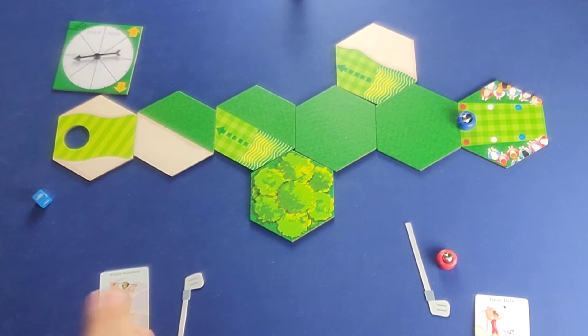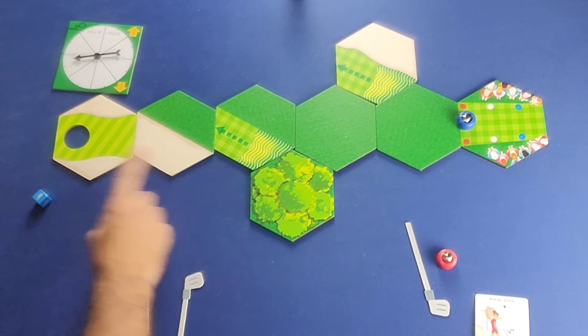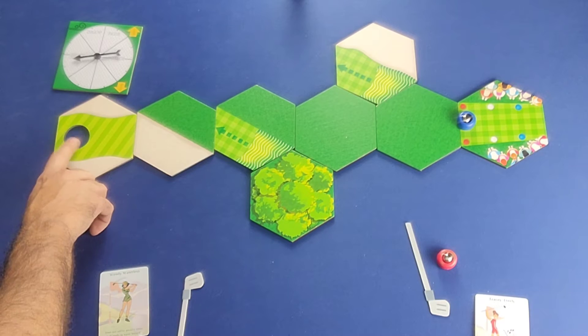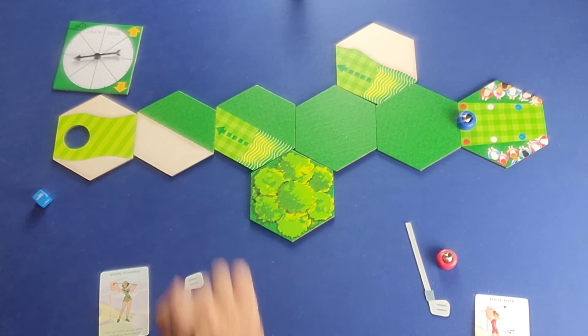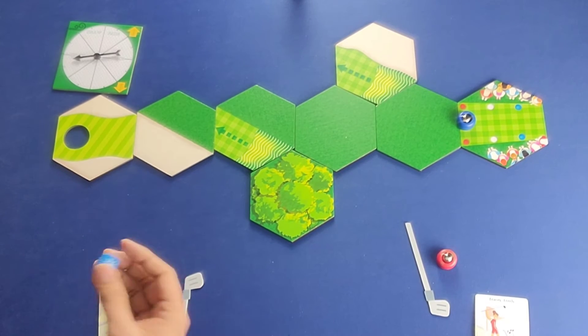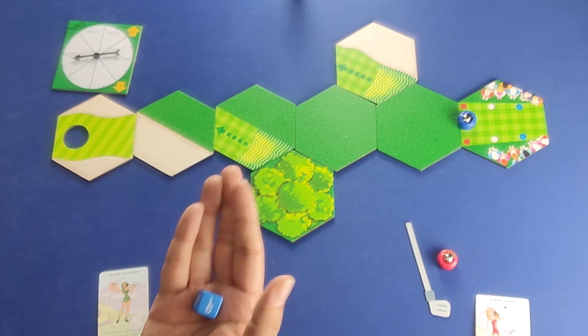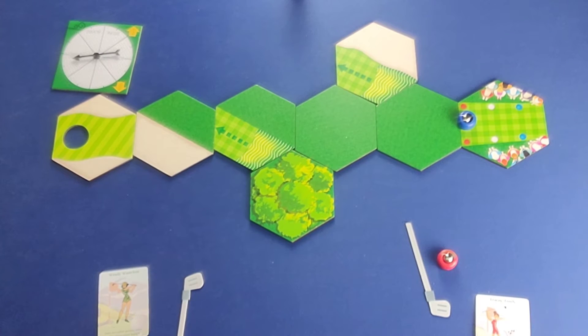Now on a player's turn, the first thing they're going to do is the player is more than one tile away from the green, that is the final tile that includes the hole. If they are more than one tile away from the green, then at the beginning of the turn, they're going to roll the weather die. And the weather die is going to tell you what the weather conditions are right then and right there as you're about to take the shot. So the first thing you do is you roll the die.